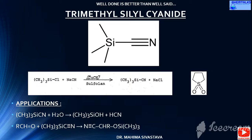Moving further, there are many organosilicon compounds. Up in the series is trimethylsilcyanide. As can be seen in the side box structurally, it has a single bond between all silicon attachments, whereas carbon and nitrogen have a triple bond as the cyanide group already has. Trimethylsilcyanide is synthesized from trimethylsilchloride on reaction with the cyanide salt of sodium.